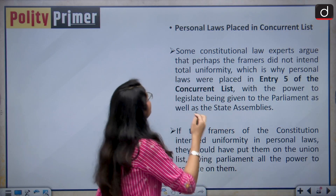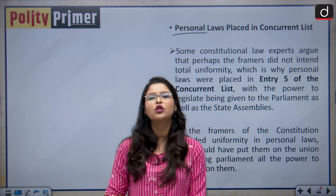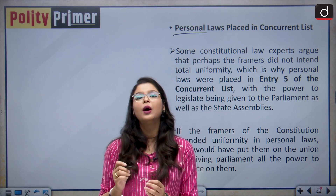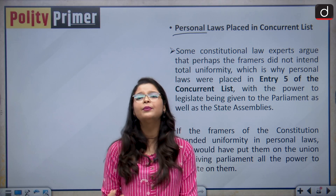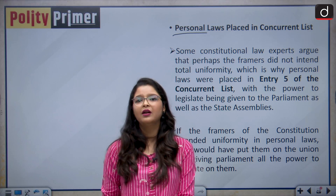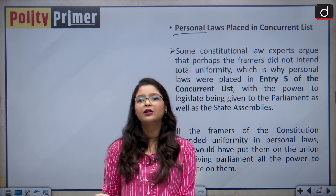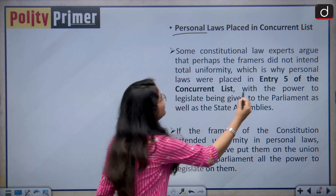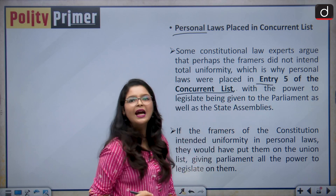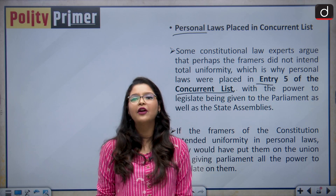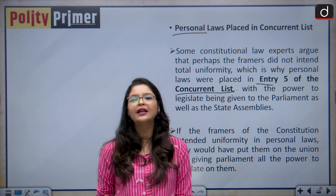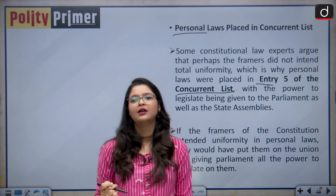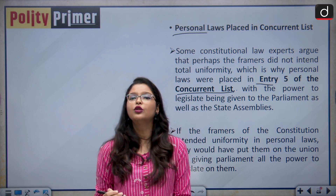Another argument against UCC concerns personal laws placed in the Concurrent List. Critics argue that if the Constituent Assembly had the intention to maintain total uniformity throughout the territory of India, they would have simply placed the provisions related to UCC in the Union List and given the Parliament the power to legislate on the subject. But the provisions related to family law and personal laws are placed in Entry 5 of the Concurrent List. This means that not only Parliament but also state legislatures have the power to legislate on this subject, and it is argued that the original intention of the Constituent Assembly was not to achieve total uniformity in the laws in India.